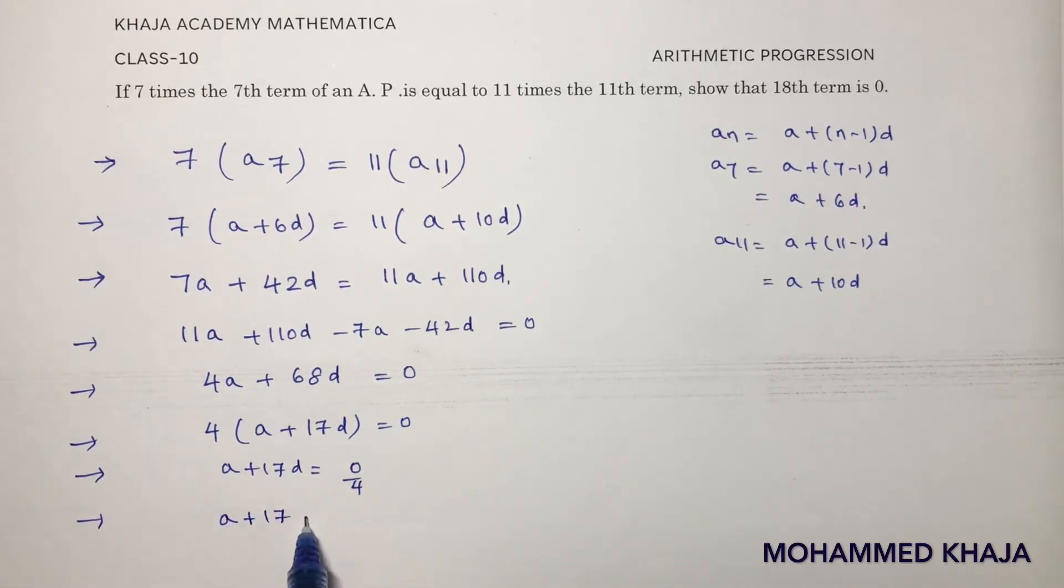Now a plus 17d equals 0, and a plus 17d is nothing but the 18th term because a18 is nothing but a plus 17d. So the 18th term is 0.